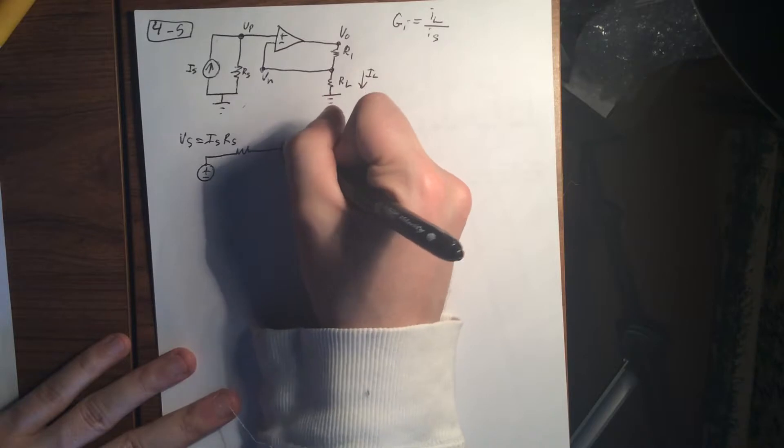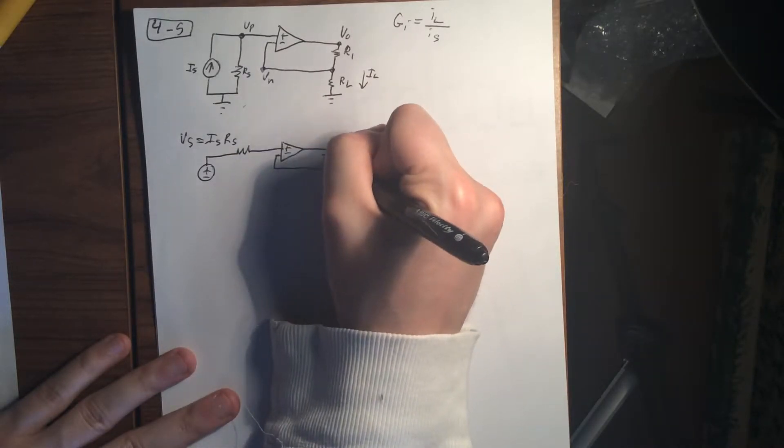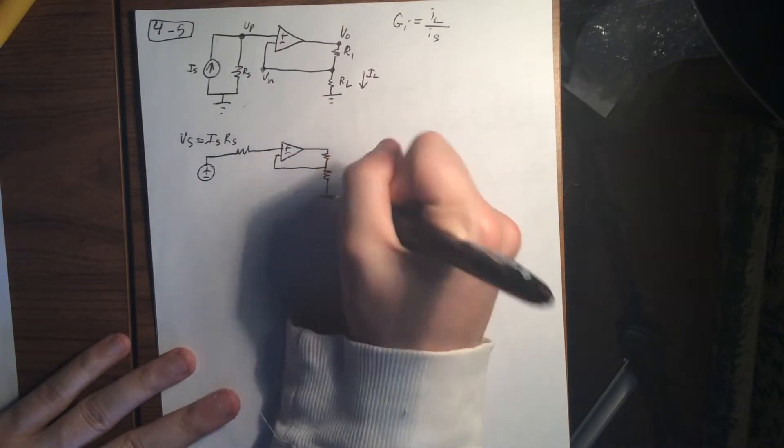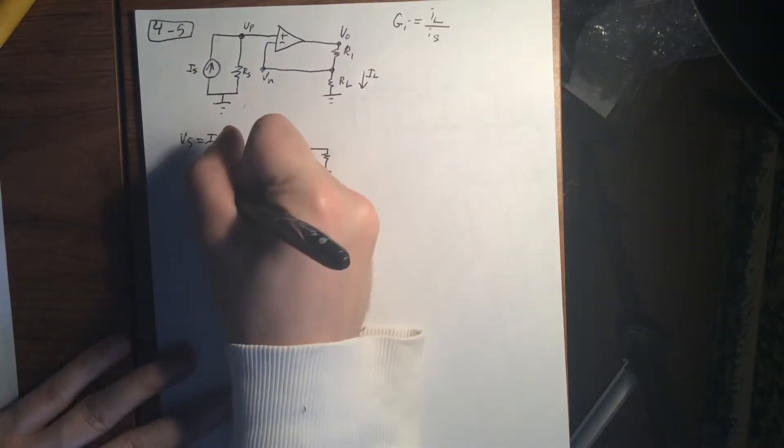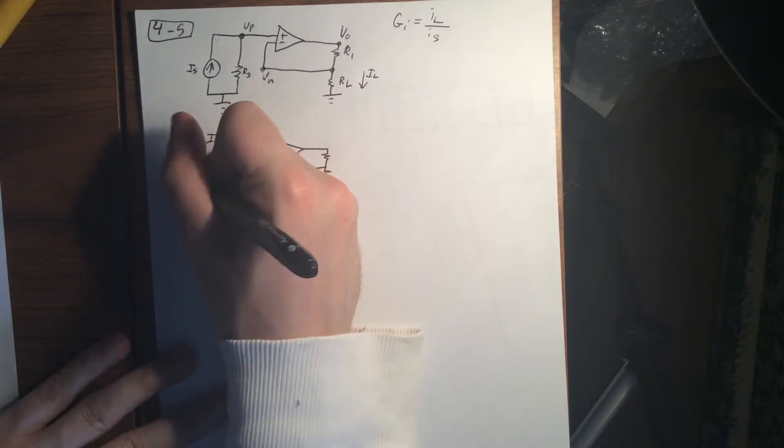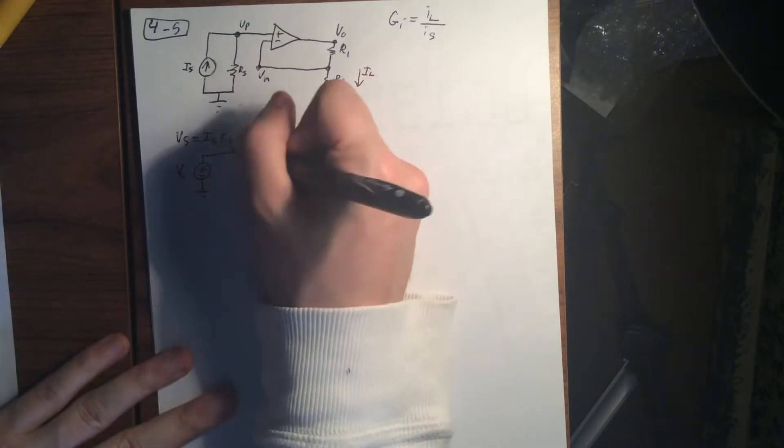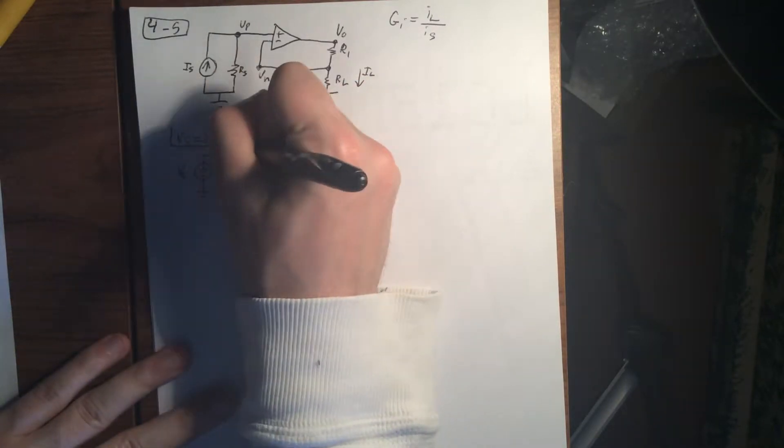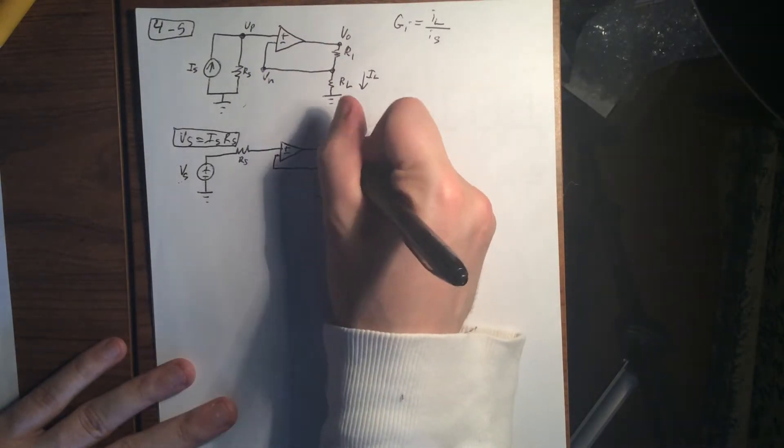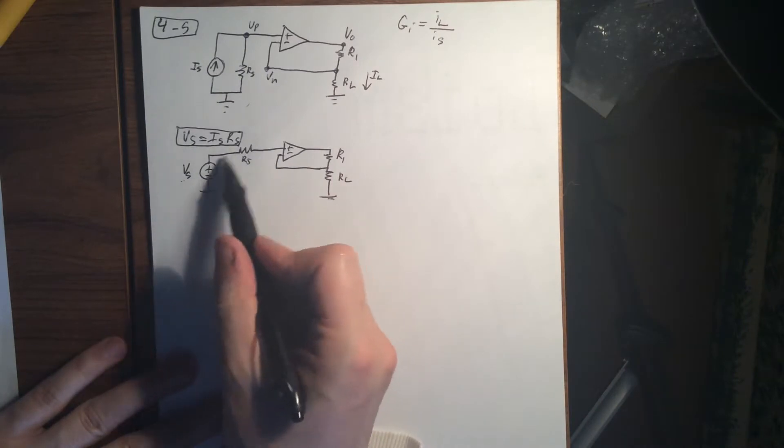Positive, negative. All right. And then remember, we call this our new Vs. Then this one is our Rs. We're going to just box that to save it up for later so that we can get it back in. And then this is R1 and this is RL. So that's our first bit. Source transformation.